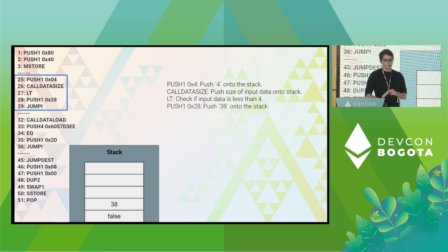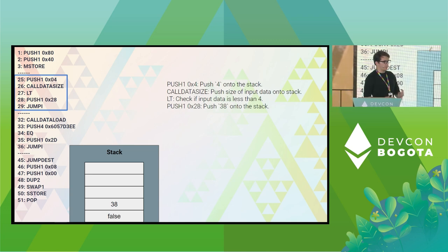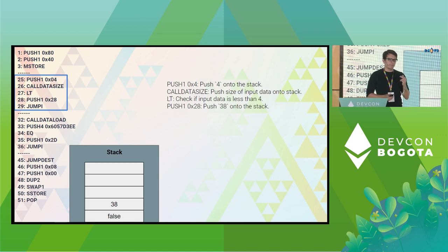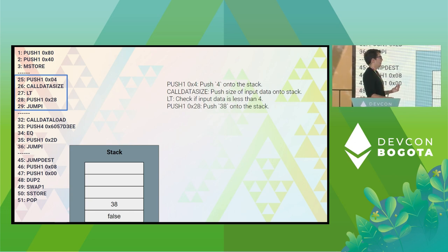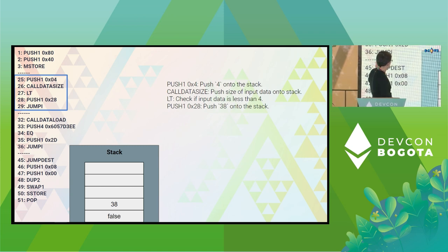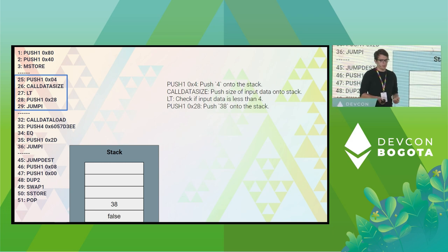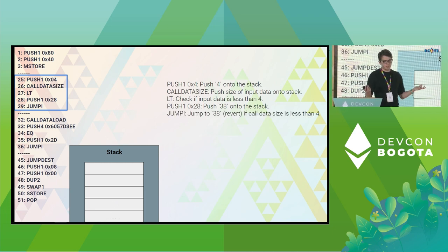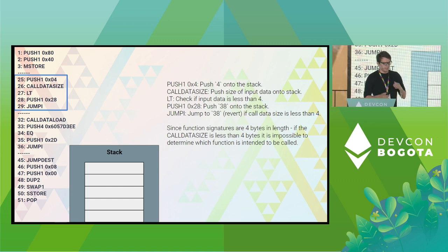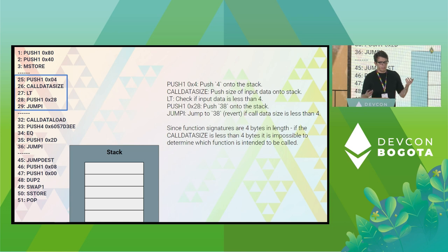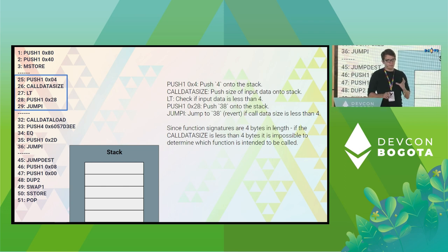We then push 0x280 (38) onto the stack. The next instruction is JUMPI — jump if — which says: if the second-from-top value is true, jump to the program counter represented by the top value. Since the second-from-top value is false, we don't jump. Essentially, since function signatures are 4 bytes, if the call data size is less than 4 bytes, we know we can't be calling a valid function, and the function gets reverted.